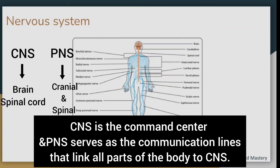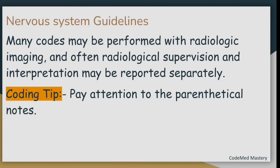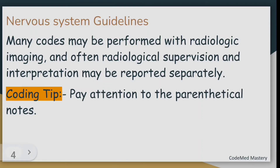Let us start with the guidelines related to the nervous system. The first guideline is that many codes may be performed with radiologic imaging, and often radiological supervision and interpretation may be reported separately. These nervous system procedures may be performed with radiologic imaging, and an important coding tip is that we have to pay attention to the parenthetical notes given below the codes.